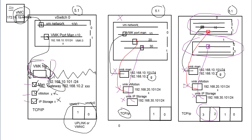That wraps up how VM kernel NICs work. In the next video we're going to look at the uplinks, and after that a video on what happens with NSX and why we want to go from 5.1 to 5.5 with VM kernel NICs. Thank you very much for watching and we'll see you in the next video.